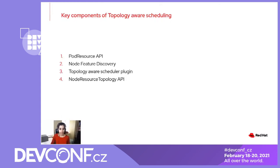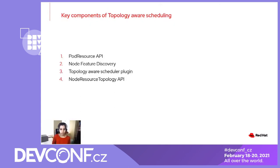The second component is Node Feature Discovery. We started working with a component called Resource Topology Exporter with the goal to expose resource topology information through CRDs. Kubernetes SIG Node recommended that we consolidate this work in Node Feature Discovery. NFD is a node-facing agent which exposes hardware capabilities in the form of node labels, annotations, and extended resources — so exposing hardware topology information as CRDs was a natural next step. NFD runs as a daemon set, collects resources allocated to running pods along with associated topology information, and identifies the NUMA nodes corresponding to those resources, exposing CRDs with per-NUMA-node resource availability.